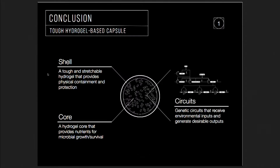To recap, our strategy combines physical containment using a tough hydrogel shell and chemical containment — providing an artificial amino acid in the core to control bacterial growth. It's a double protection to keep bacteria inside the bead without escaping, plus the synthetic biology circuits which allow all sorts of synthetic biology tools developed in the lab.